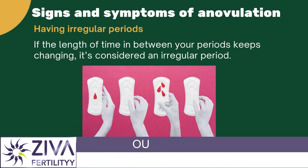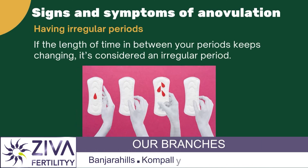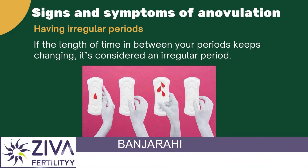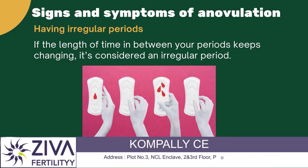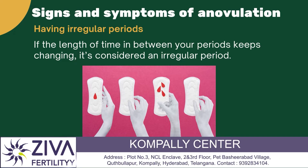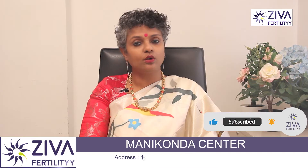Having irregular periods is one sign. If the length of time in between your periods keeps changing, it's considered an irregular period. The average menstrual cycle is 28 days, but it can be a couple of days shorter or longer than that.